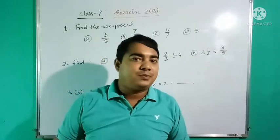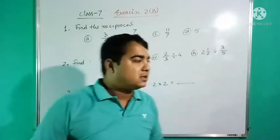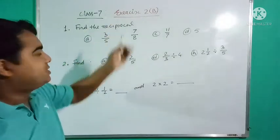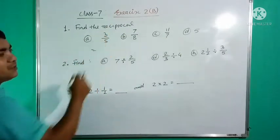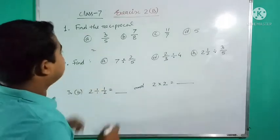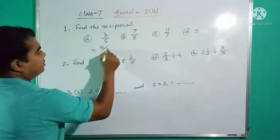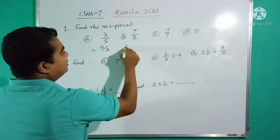3/5 reciprocal is 5/3. Similarly, we need to solve and find the reciprocals. First question is 3/5, its reciprocal is 5/3.